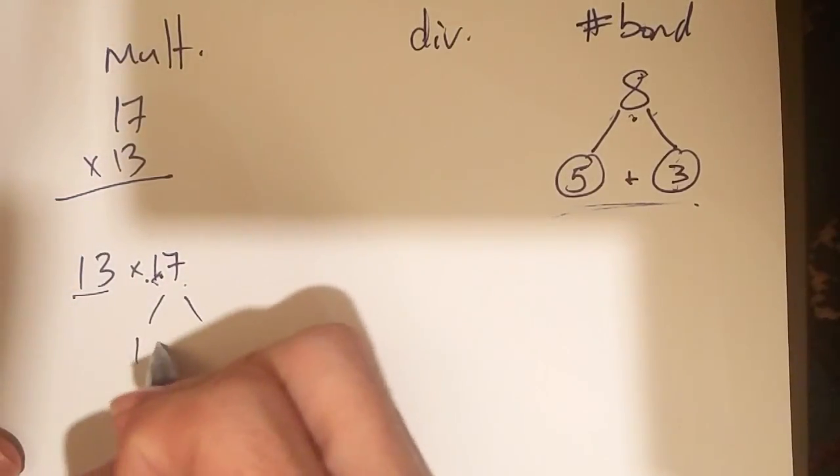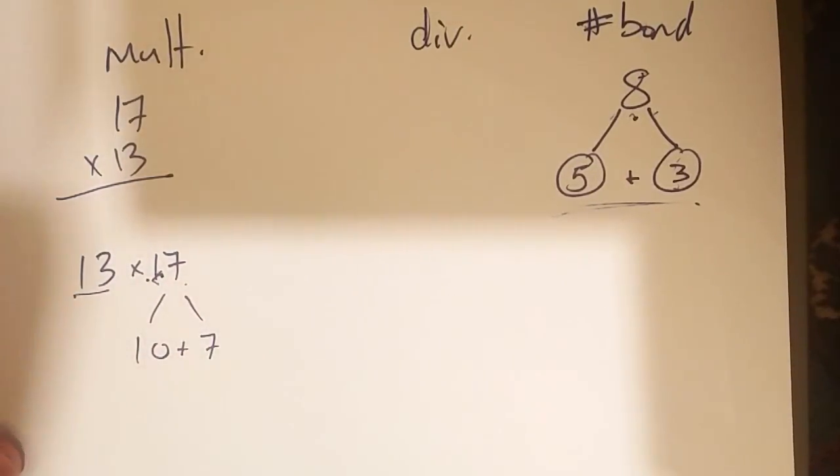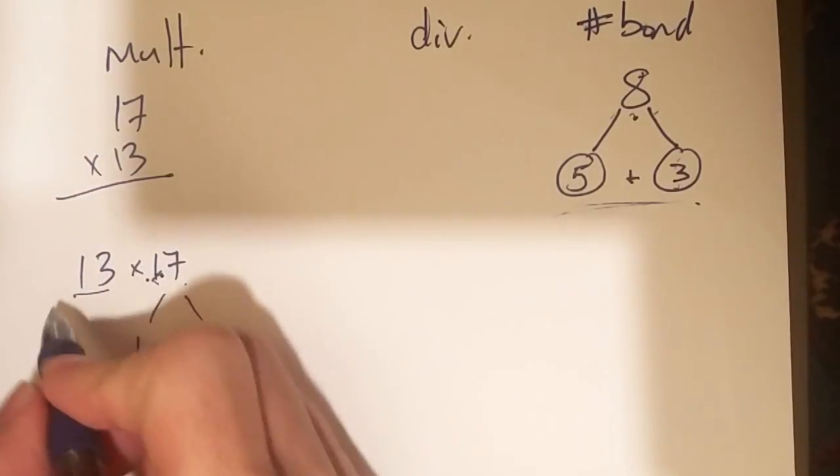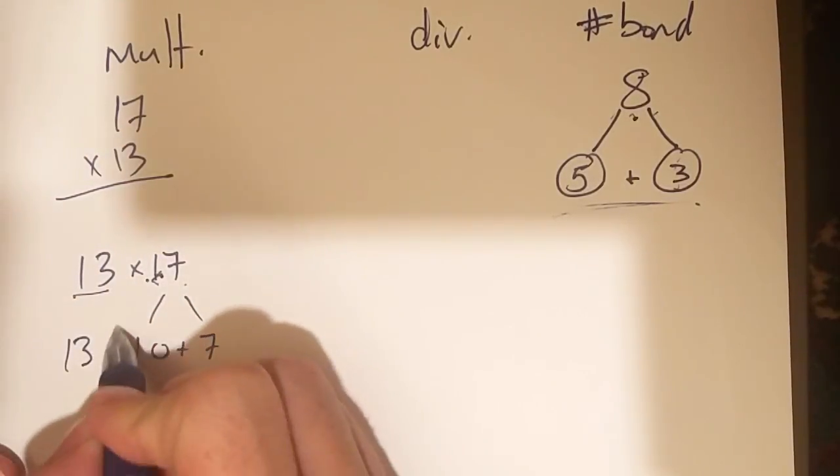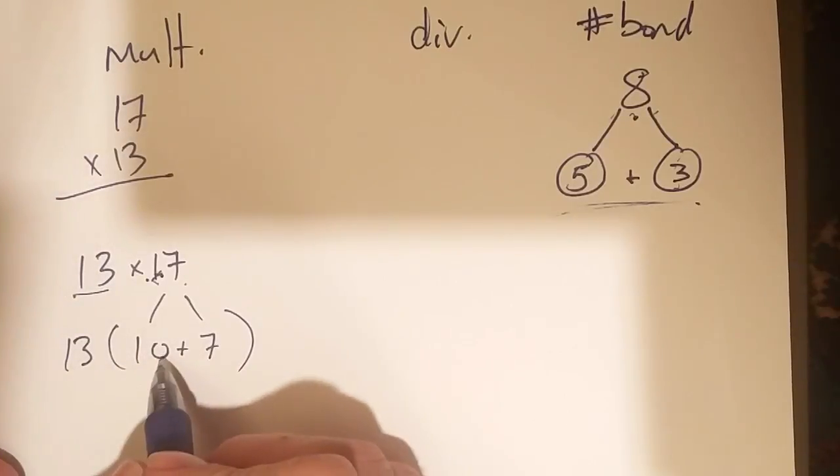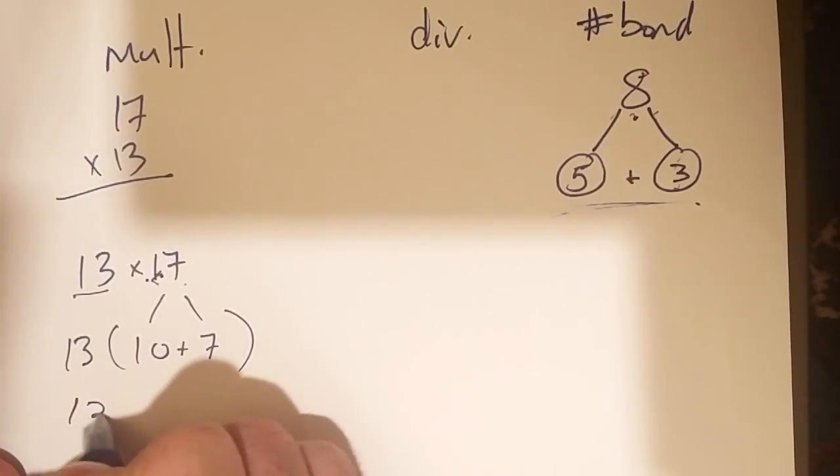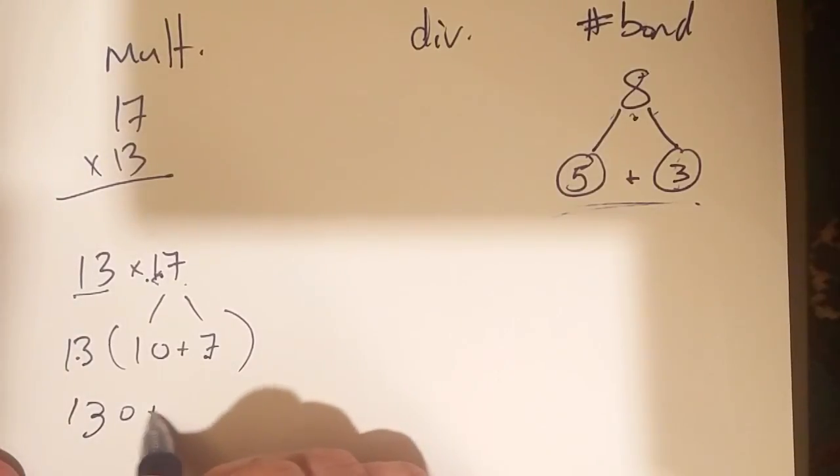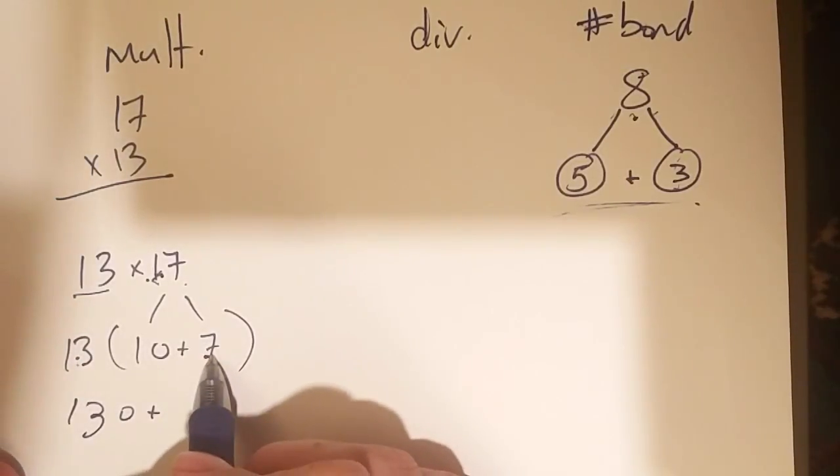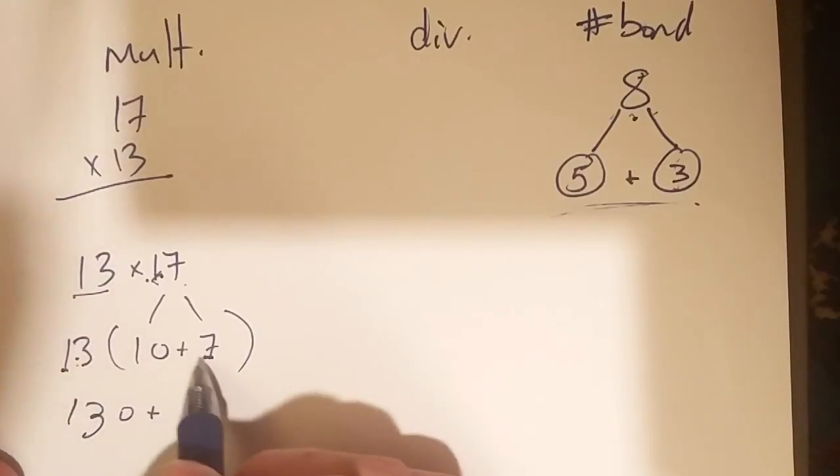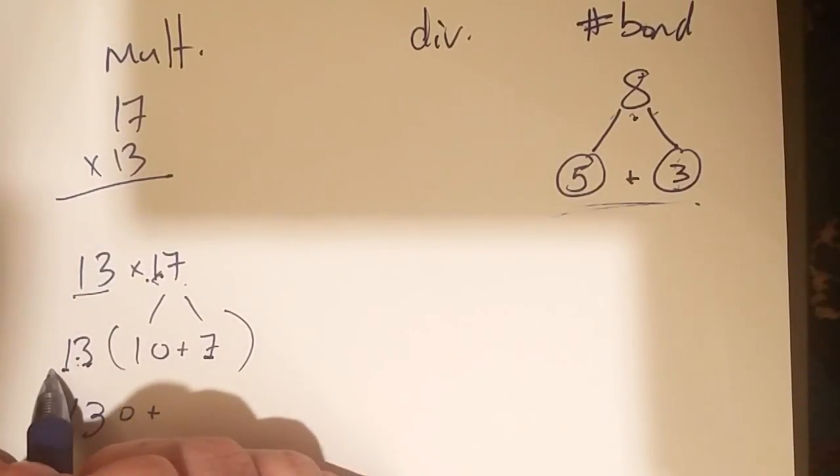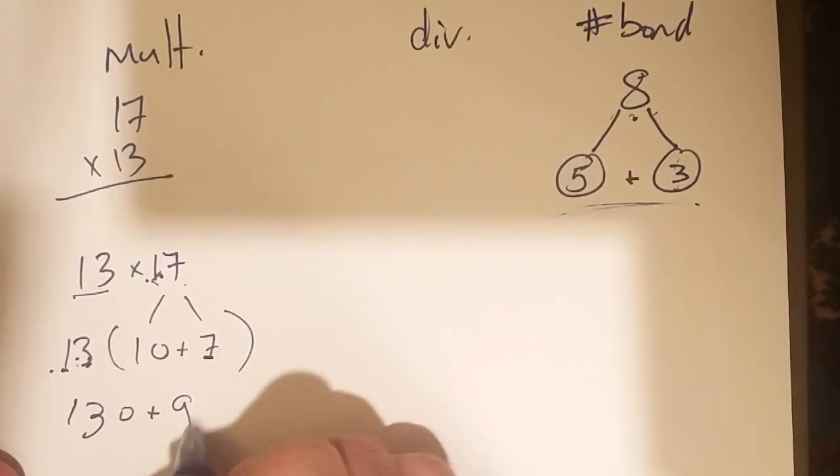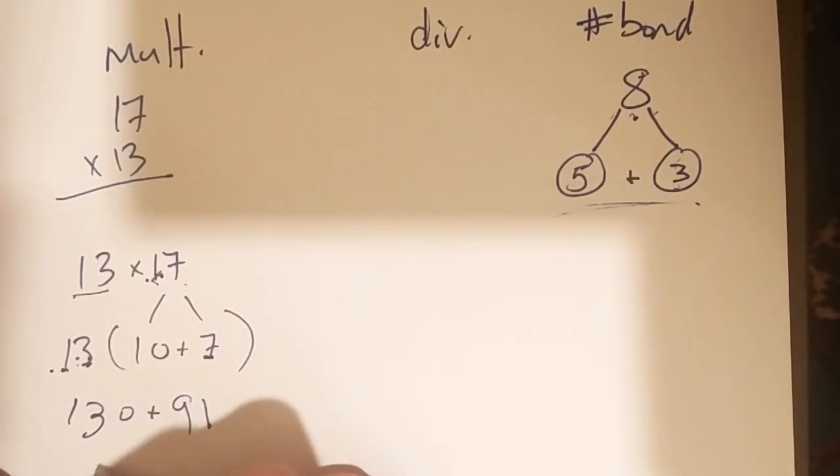So, 17 can actually be split up to 10 plus 7. Well, I have 13 times 10. What's 13 times 10? 10 groups of 13 is 130. And 13 times 7. So, 130 plus 13 times 7. Well, I know 7 times 10 is 70. I know 7 times 3 is 21. So, 70 plus 21 is 91. Add these all up together and I'll have a grand total of 221.